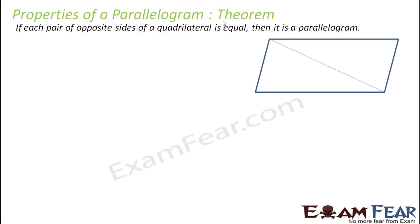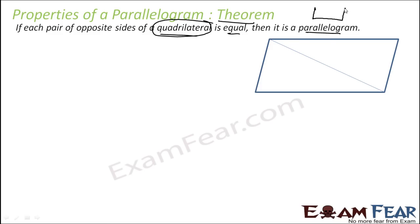So that's the activity. Now we'll try to prove it as a theorem. The theorem says: if each pair of opposite sides of a quadrilateral is equal, then it is a parallelogram. Note that this applies to any quadrilateral — if the opposite sides are equal, this implies it is a parallelogram.